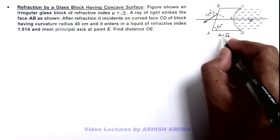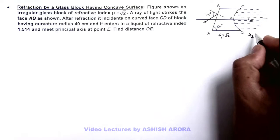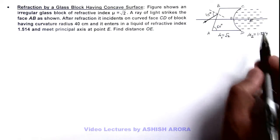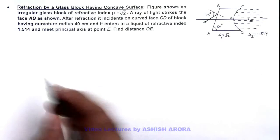The refractive index of this glass is given as root 2, which can be taken as mu 1, and the refractive index for this liquid is 1.514. The light ray meets the principal axis at point E. We are required to find the distance OE.